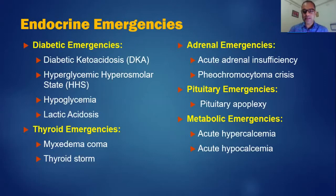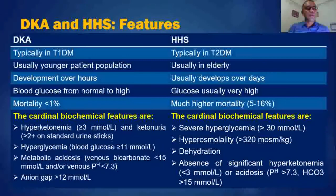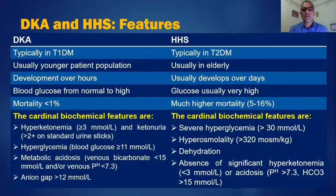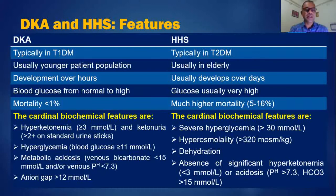DKA is usually a presenting feature or complication occurring in type 1 diabetes mellitus, typically in younger patients including adolescents. In comparison, hyperglycemic hyperosmolar state is a complication of type 2 diabetes mellitus, usually occurring in elderly, previously diagnosed type 2 diabetic patients. The development of DKA is very abrupt and can occur over hours — missing even a single dose of insulin in a type 1 diabetic patient can lead to DKA.